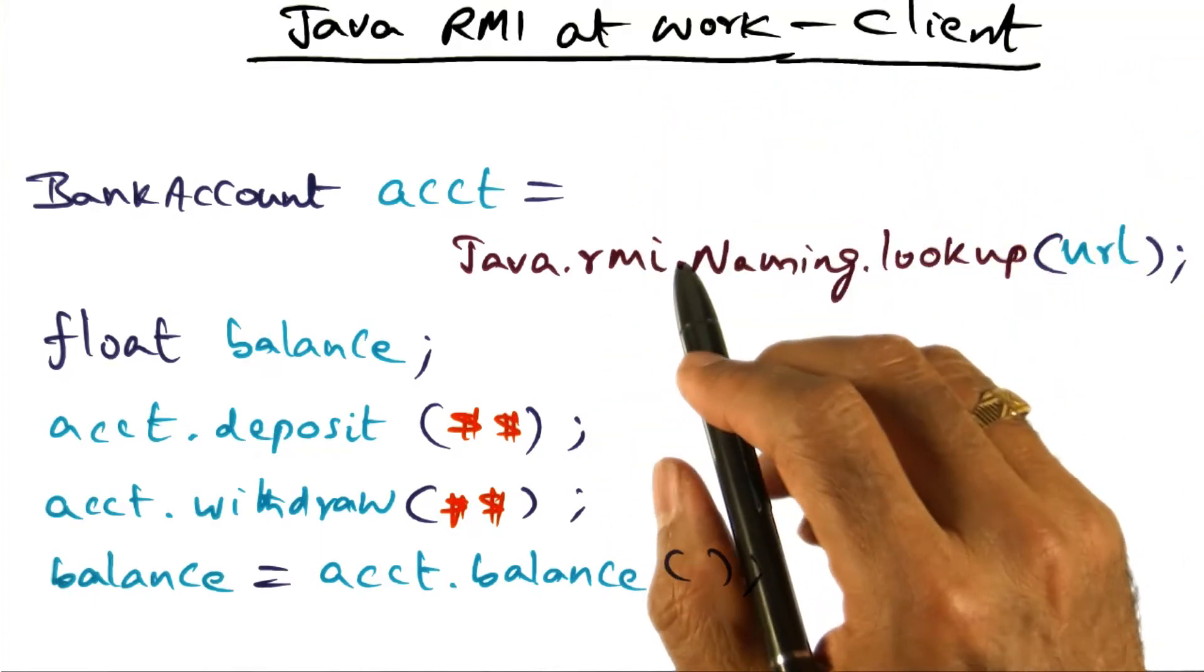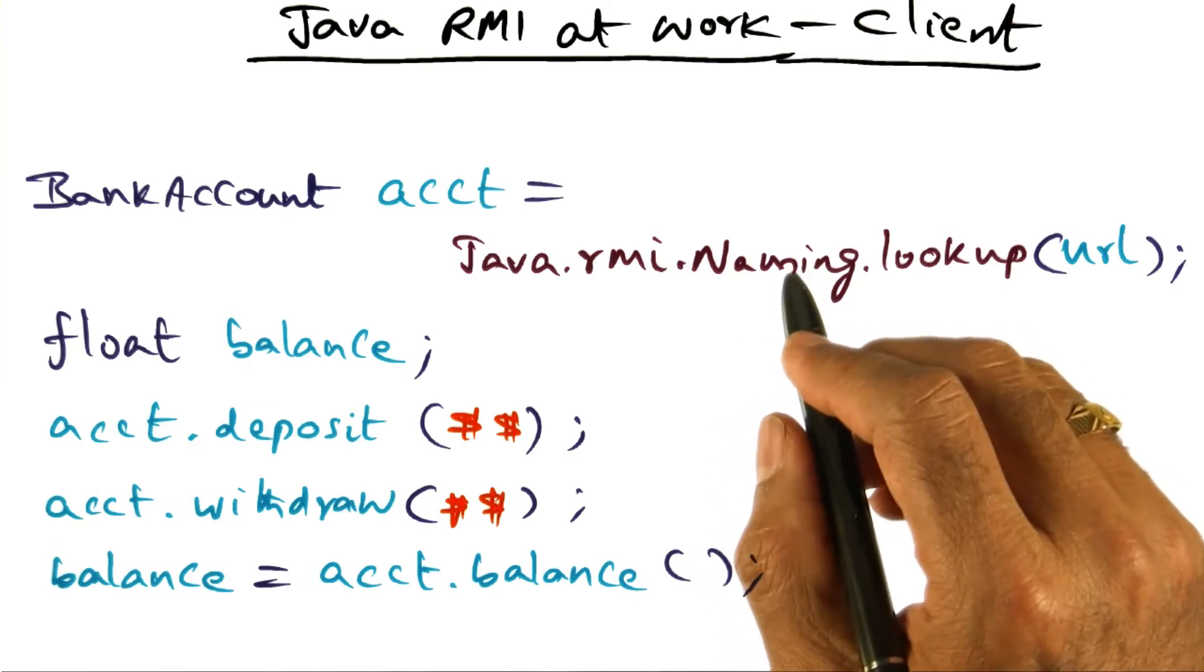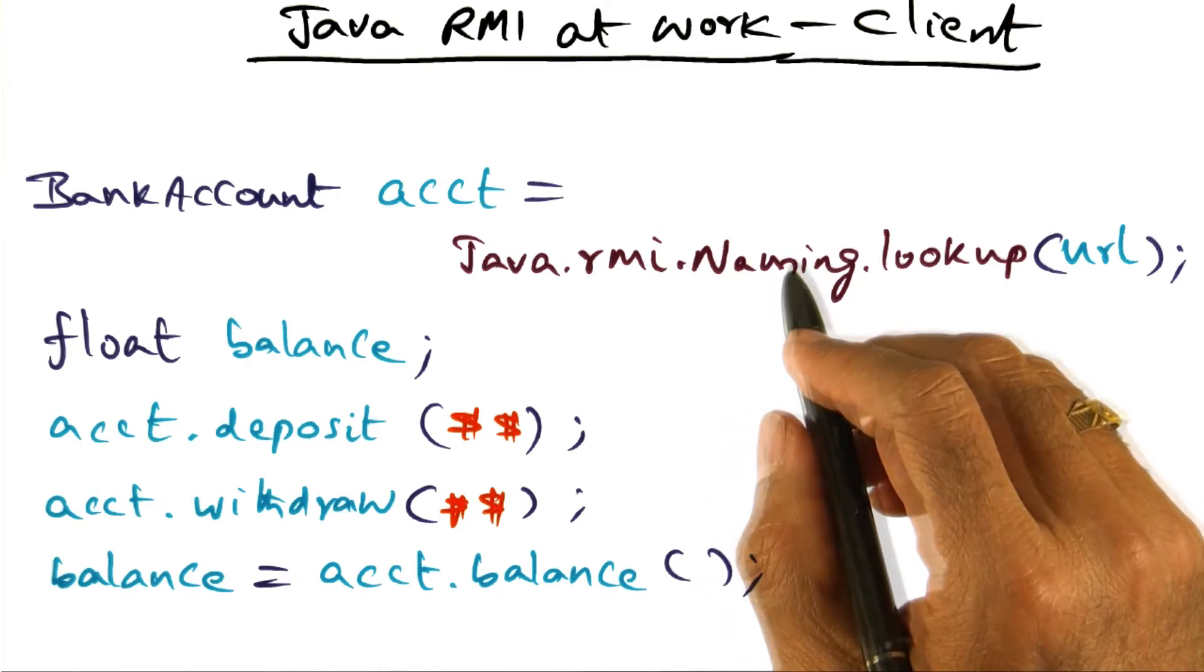Now let's look at the client side. Look at the ease with which any arbitrary client on the network can access the server object.